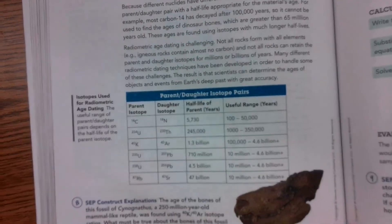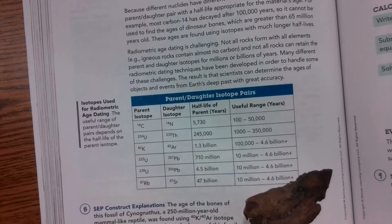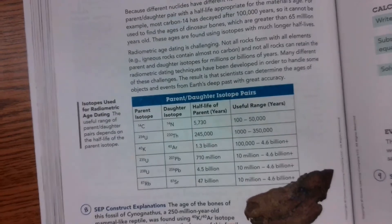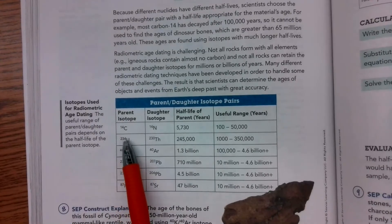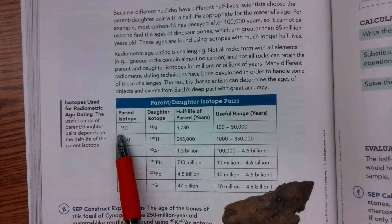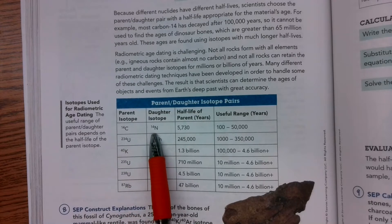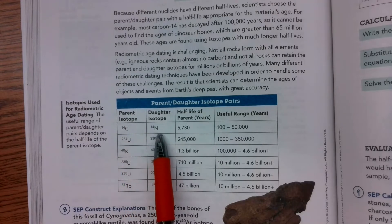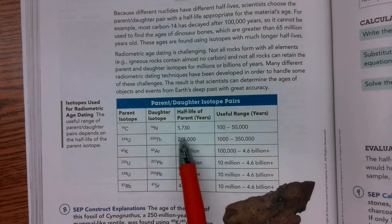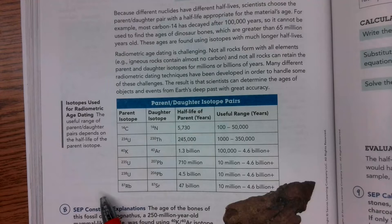If we come down here, we have a table of these parent and daughter isotope pairs. One that you're probably familiar with is carbon dating. The carbon isotope we use is carbon-14, and we know it's going to decay into nitrogen. It's still nitrogen-14 — a neutron is turning into a proton, so it has a beta minus emission. Its half-life is about 5,000 to almost 6,000 years.